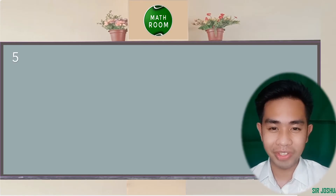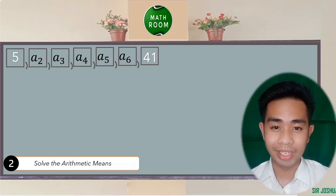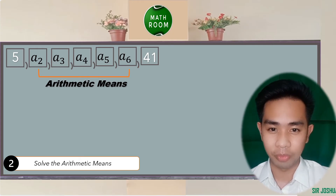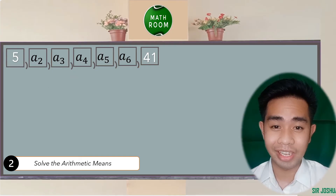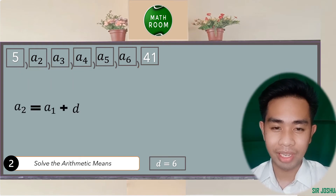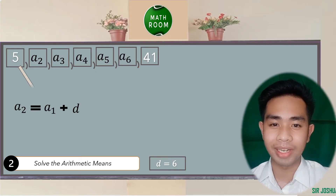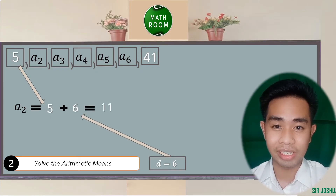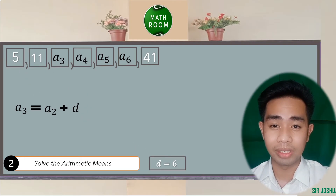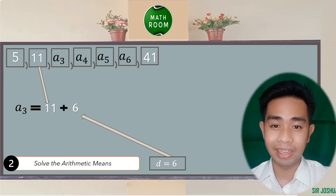Now we solve for the arithmetic means using common difference d equals 6. A sub 2 equals a sub 1 plus d: 5 plus 6 equals 11, so the second term is 11. A sub 3 equals a sub 2 plus d: 11 plus 6 equals 17, so the third term is 17.